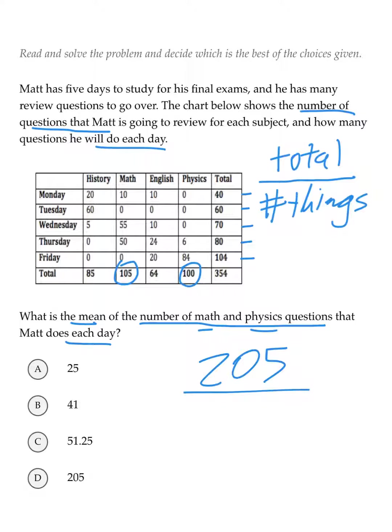We came up with our totals of 105 and 100 from compiling the math numbers and the physics numbers for each of the five days. So we're going to put a five for our number of things. 205 divided by five should give us 41, which is answer B. So go ahead and bubble that in.